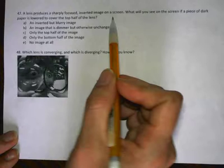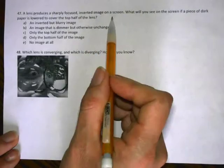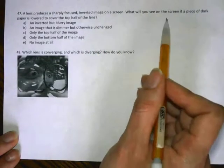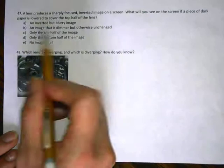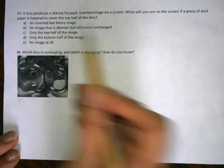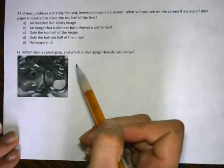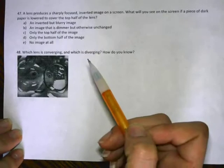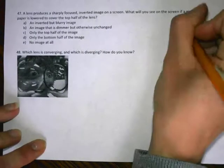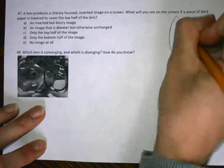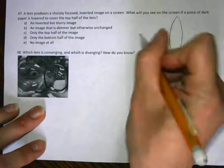Next is a lens produces that same sharp focused image on the screen. If you put a piece of paper to cover the top half of the lens, rays will only go through the bottom half of the lens. But you don't need the whole lens to focus an image.